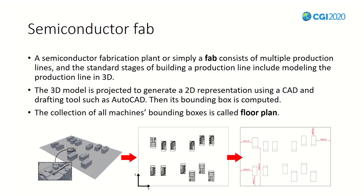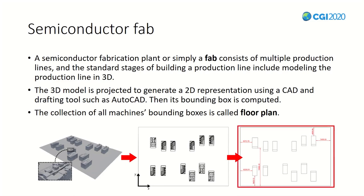The semiconductor fabrication plant, or simply a fab, has multiple production lines, which are the placement of semiconductor production facilities. To generate the production lines, we generally perform the following steps. First, the facilities to be placed in the workspace are modeled in 3D. Second, we create the 2D model by projecting the 3D CAD model into 2D — drafting tools such as AutoCAD are commonly used. The 2D model has a rectangular facility aligned with the 2D coordinate axis. Finally, to simplify the facility information of this 2D model, we calculate the bounding box and create a new shape. We define this simplified design as a floor plan.